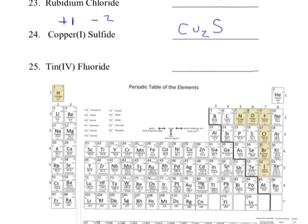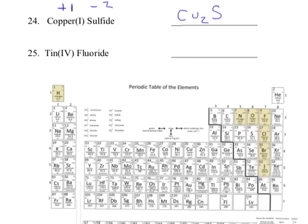Finally, our last one: tin 4 fluoride. The Roman numeral tells me it's a plus 4. Fluoride is always minus 1. I write Sn — unfortunately that is the chemical symbol for tin. I write down fluoride's number, 1, which I don't write down, then F gets tin's number, 4. That gives SnF4. We are done with our homework — I hope you enjoyed it as much as I did.